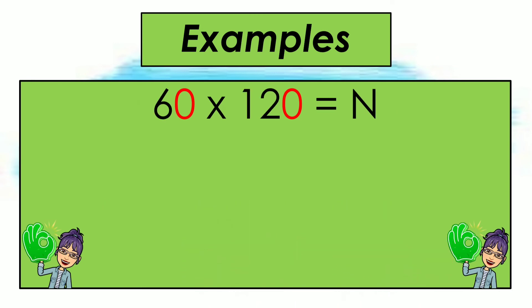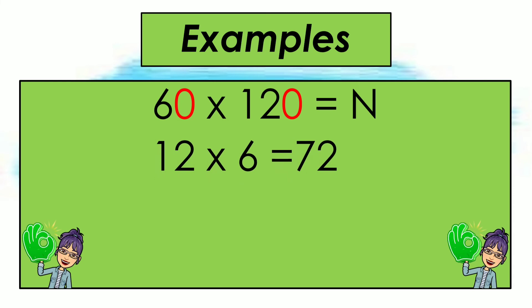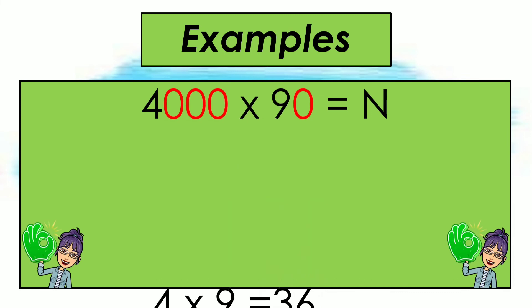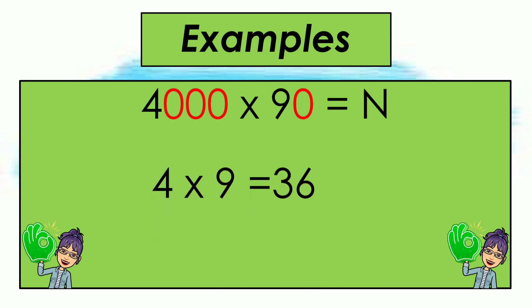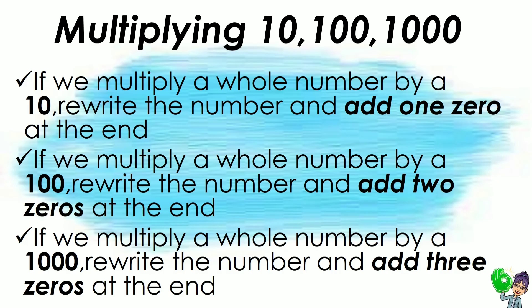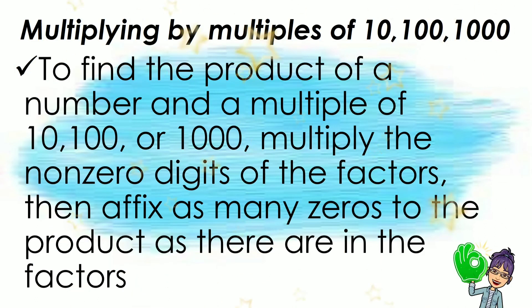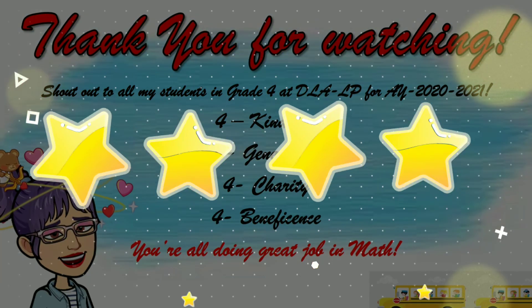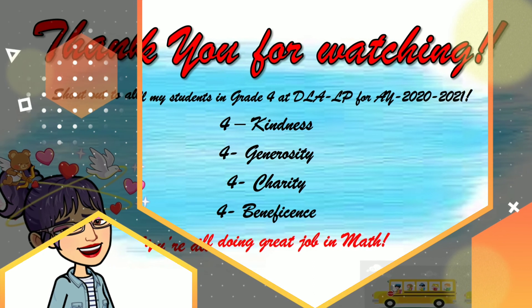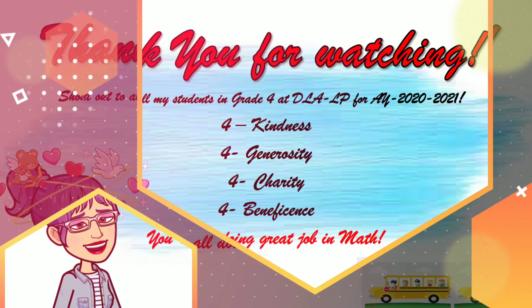Next: 60 times 120 — 12 times 6 is 72. Since we have two zeros in the factors, add them to 72 to get 7,200. Last example: 4,000 times 90 — 4 times 9 is 36. With four zeros in the factors, add them to 36 to get 360,000. That's all about special products. We'll see you next time!